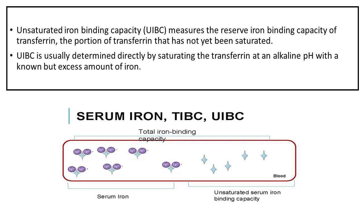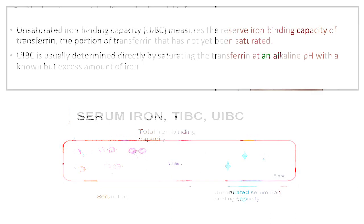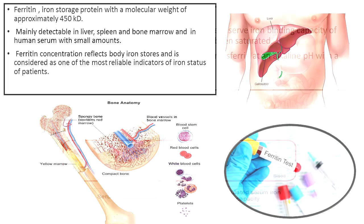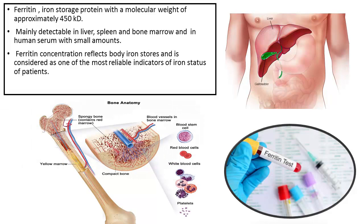UIBC is usually determined directly by saturating the transferrin at an alkaline pH with a known but excess amount of iron. Ferritin is an iron storage protein with a molecular weight of approximately 450 kD, mainly detectable in the liver, spleen, and bone marrow.